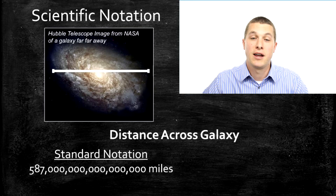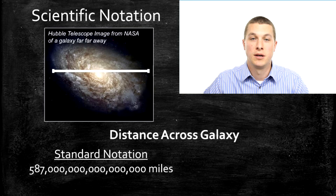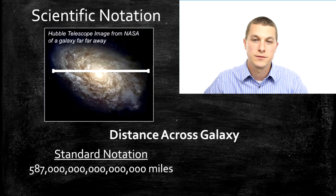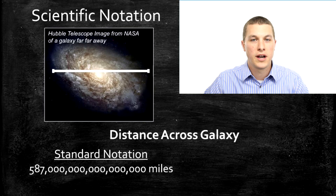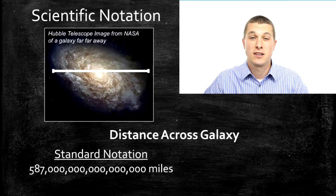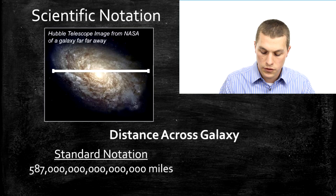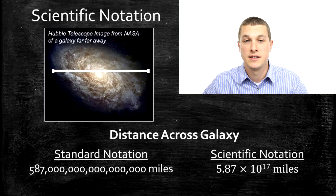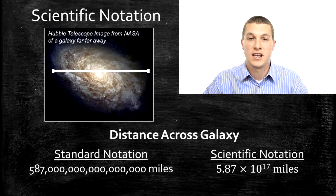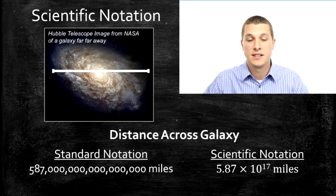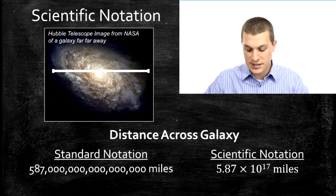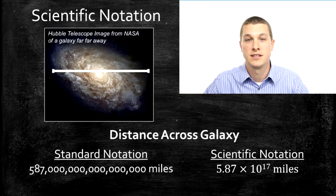On this first slide, we have an example of a really, really big number — the distance across a galaxy, which turns out to be about 587 quadrillion miles. When you write it as we ordinarily write numbers, we call that standard notation. It's a lot more convenient to express these big numbers in scientific notation, and you see this times 10 to the 17th thing.